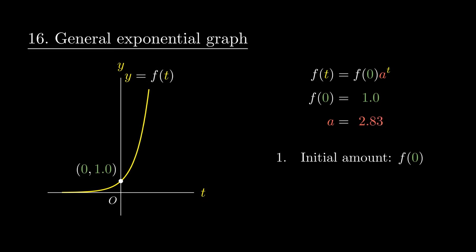f of 0 still measures the initial amount. If a equals 1, then the graph remains constant at f of 0. And if a is smaller than 1, we obtain the exponential decay model.